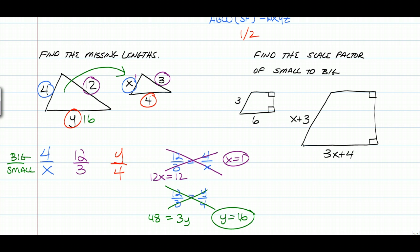All right. Let's see how you did. So what you want to do, again, is find your matching sides. So 3 is going to match up with X plus 3. And 6 is going to match up with 3X plus 4. So what you want to do is set up that ratio.